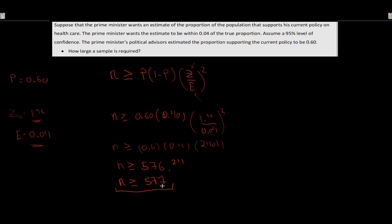If we didn't know the true population proportion, a good approach would be to assume 50%. Right in the middle — just presume a 50% true population proportion and work through it. Typically you'll have a prior estimate, but if you ever come across a question where you don't, simply assume a population proportion of 50%.